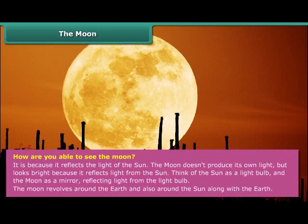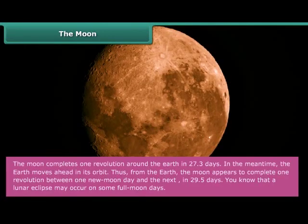Think of the Sun as a light bulb, and the Moon as a mirror, reflecting light from the light bulb. The Moon revolves around the Earth, and also around the Sun, along with the Earth. The Moon completes one revolution around the Earth in 27.3 days. In the meantime, the Earth moves ahead in its orbit. Thus, from the Earth, the Moon appears to complete one revolution between one moon day and the next in 29.5 days.